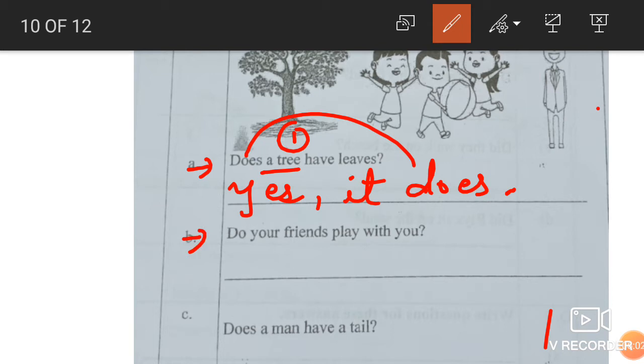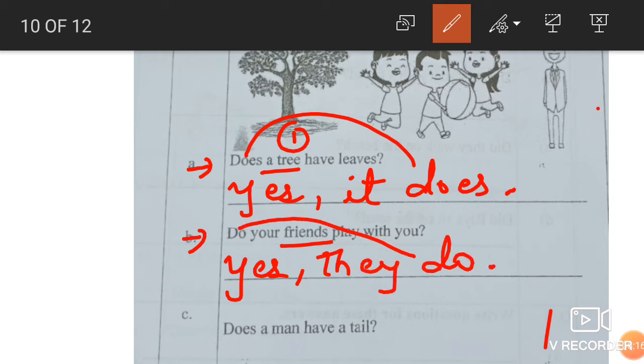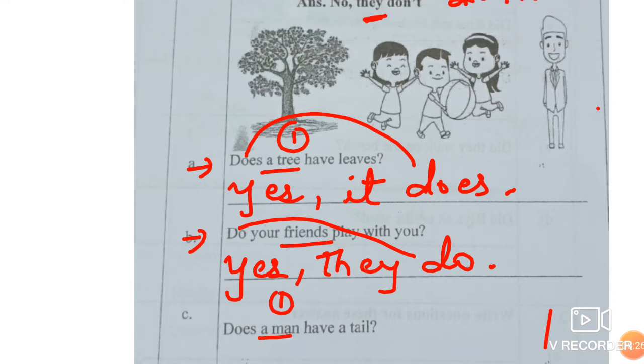Next. Do your friends play with you. Friends more than one. Do your friends play with you. So what will come? Yes. After yes, comma. Now friends more than one, so they. Yes, they. Do in the question, do in the answer. Yes, positive, so not is not there. Next now, does a man have a tail.